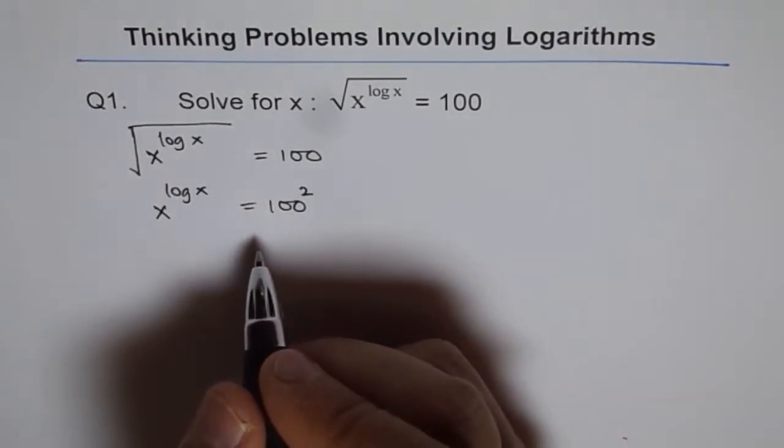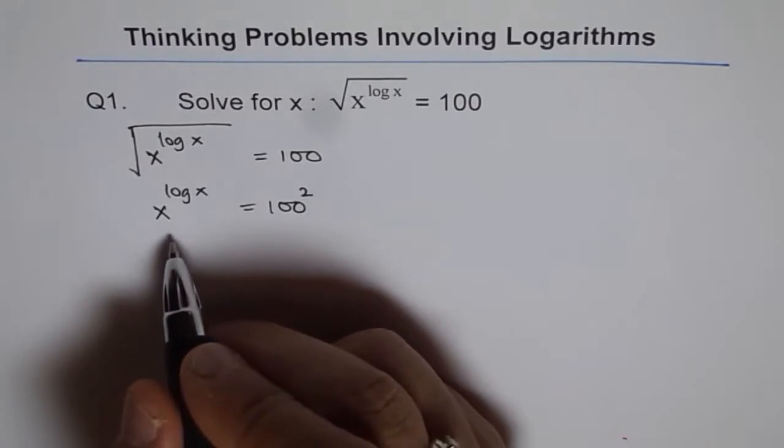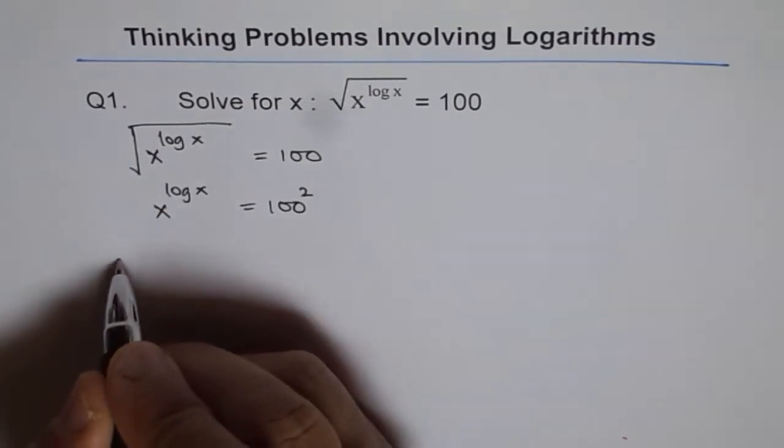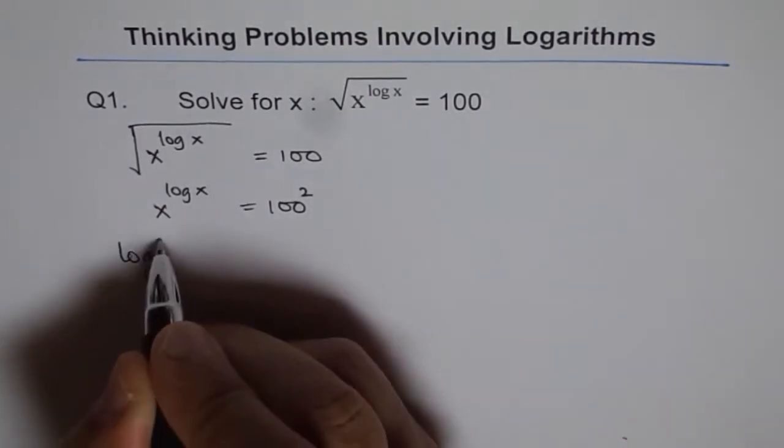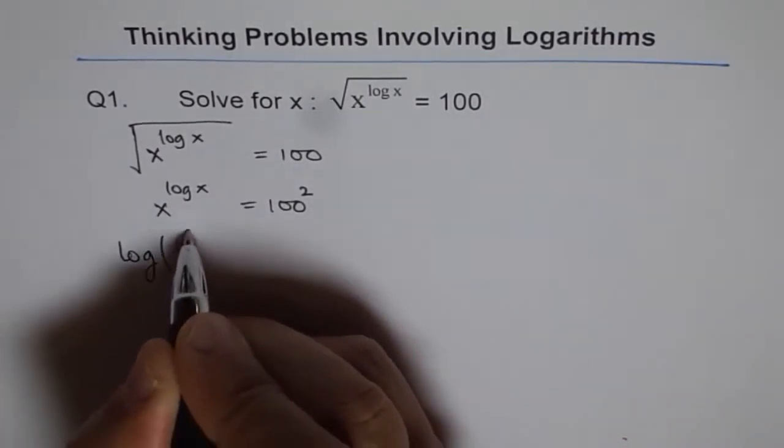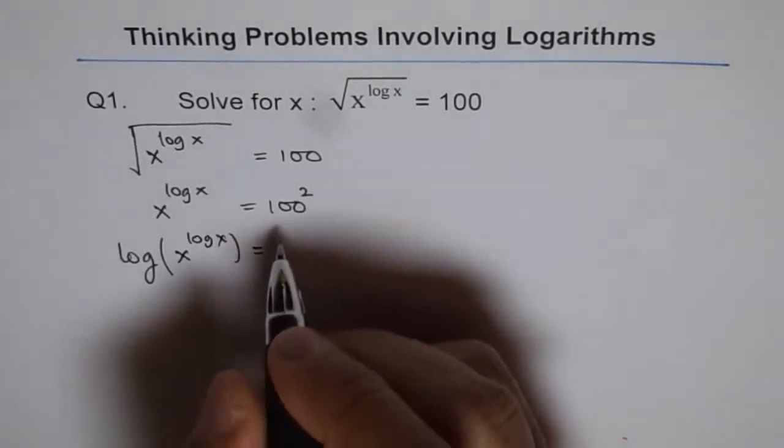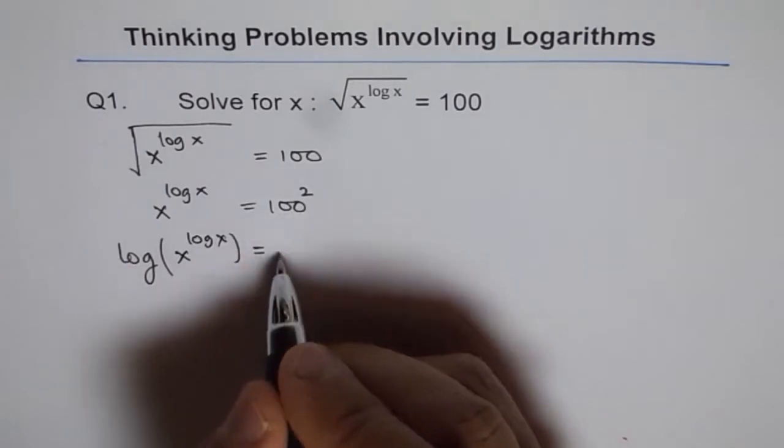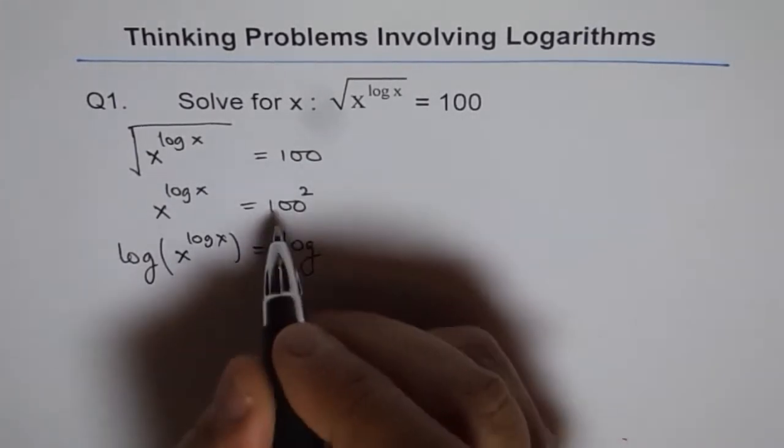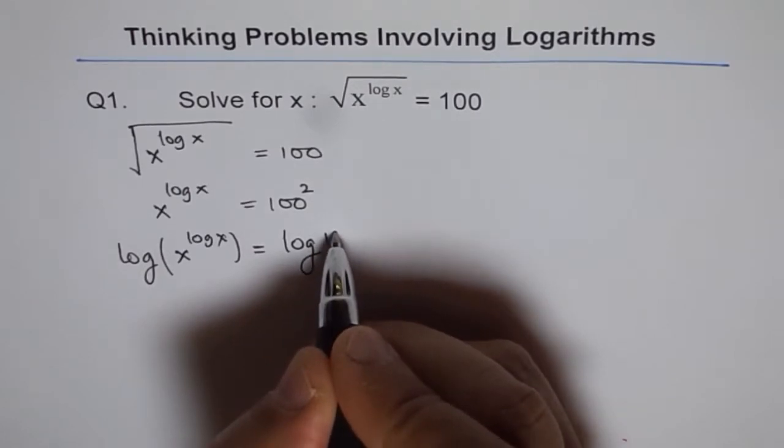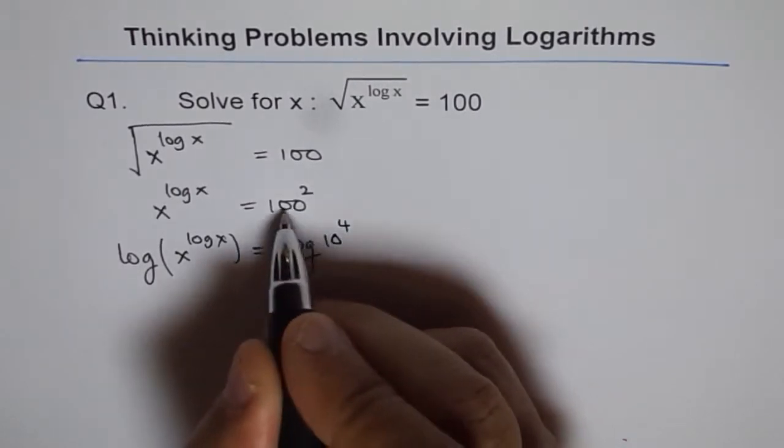Now let's take log both sides, log to the base 10. So we get log of x to the power of log x equals to - so this is log of, we can write this as 10 to the power of 4. Correct? 100 has 4 zeros.